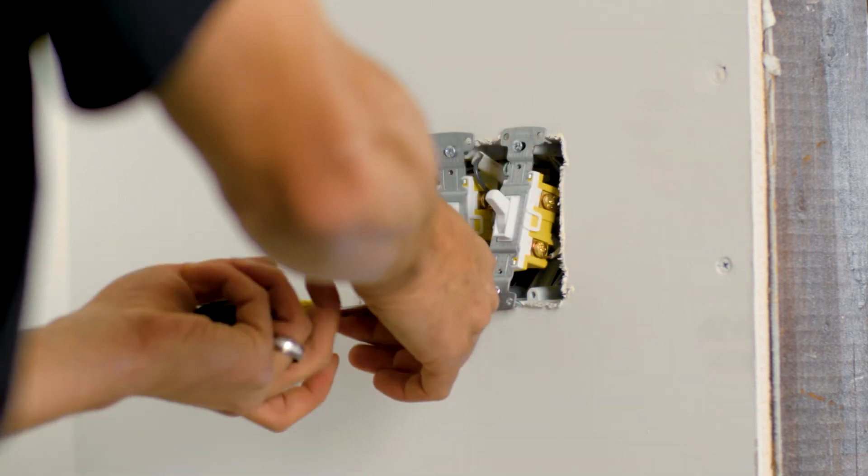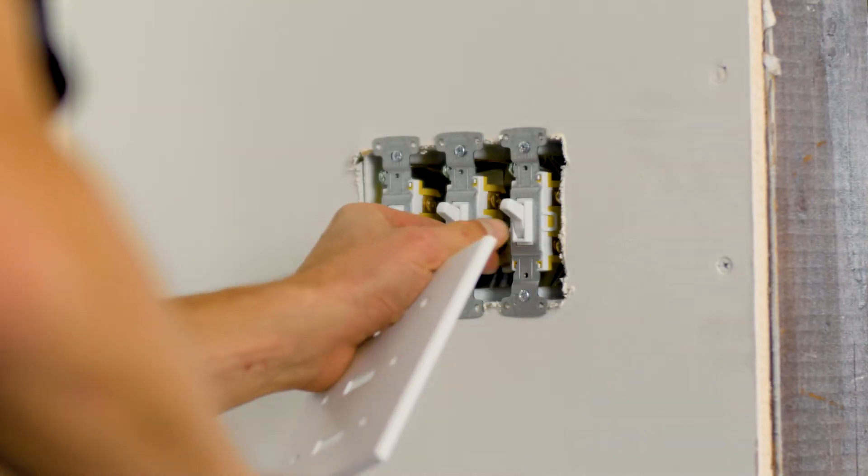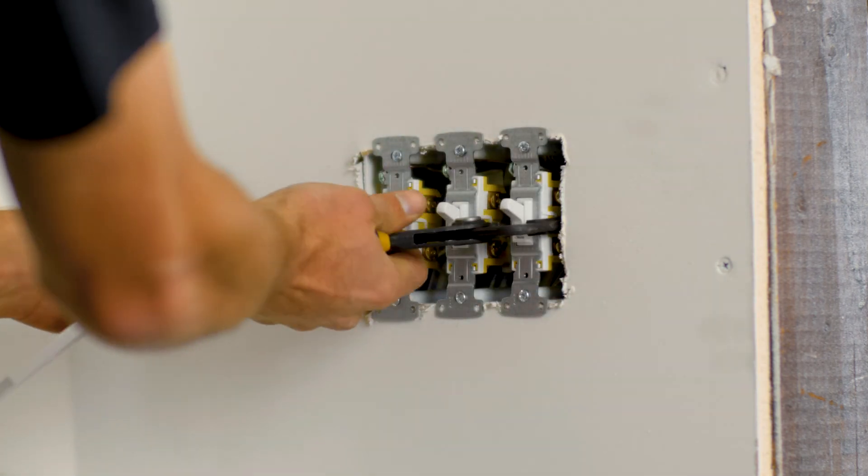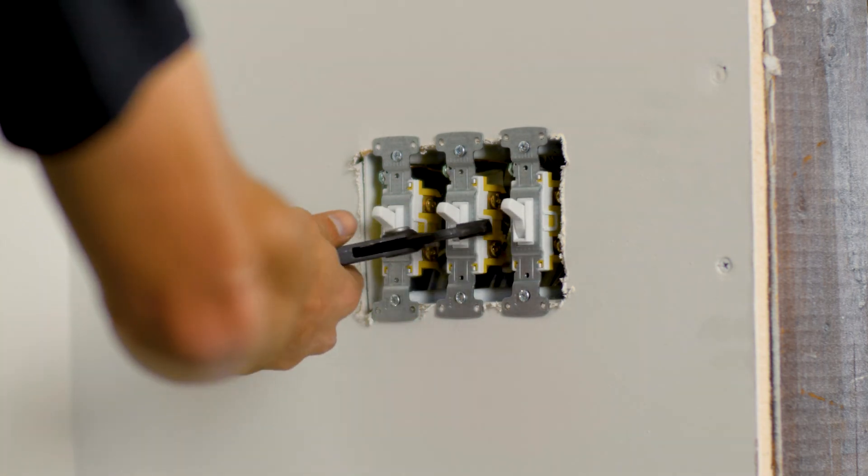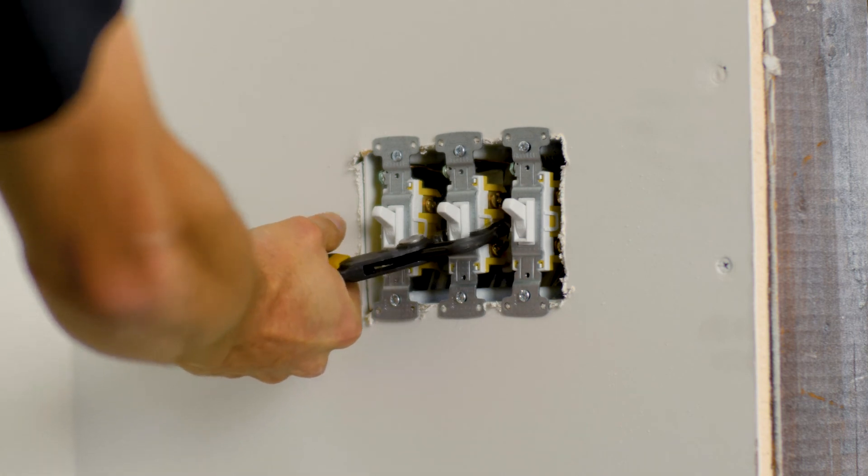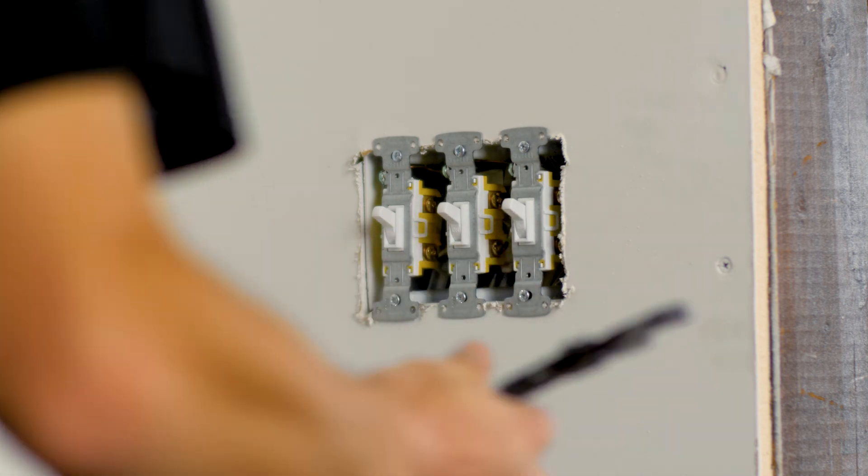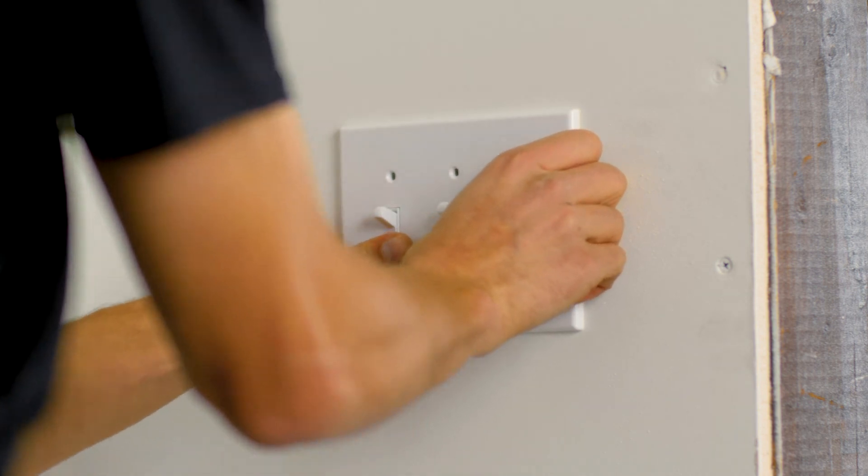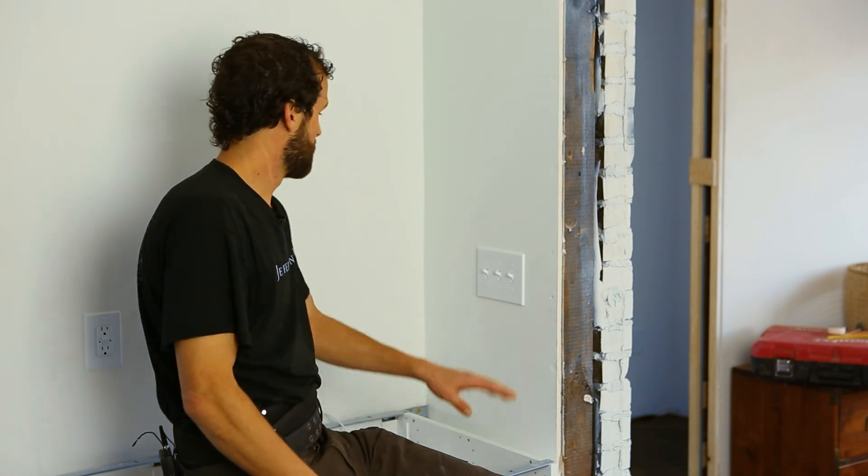I'm not quite happy with how that switch is seated. I'm going to use my channel locks and gently on the sides of the device, I'm going to straighten it up. Actually, I think all of these I will. There, I want a good clean finish. Little soldiers in a straight line. There you have it. Three gang switch box. All switches are terminated, plates are installed. I hope you'll join us for the next video.